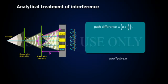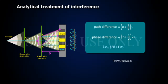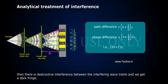If path difference is equal to (n + 1/2) into lambda, or phase difference is (n + 1/2) into 2 lambda, that is (2n + 1) pi, then there is destructive interference between the interfering wave trains and we get a dark fringe.